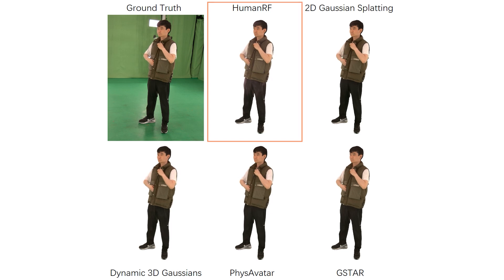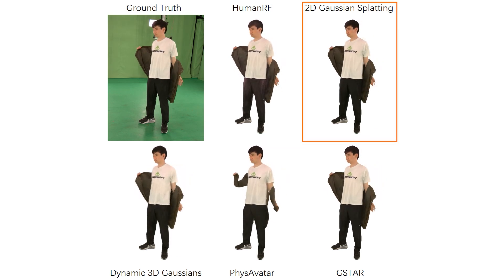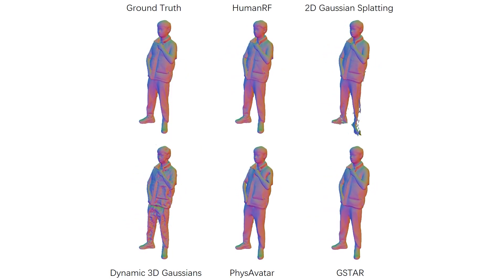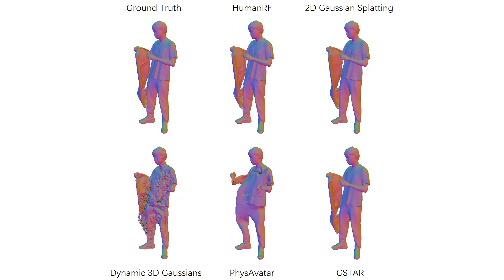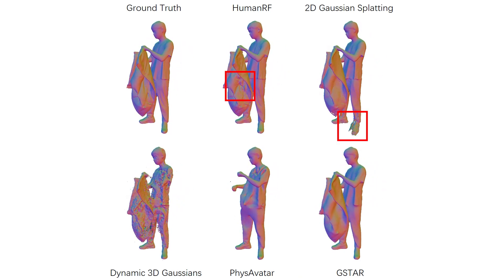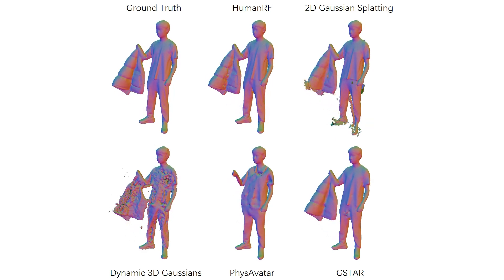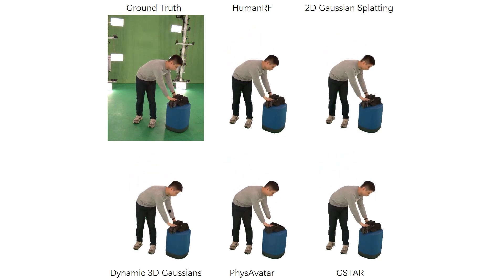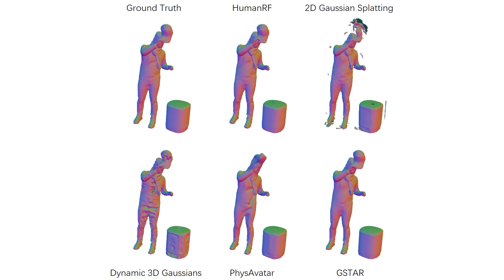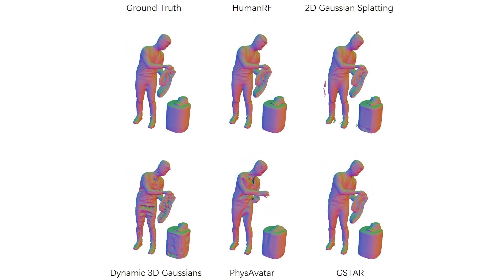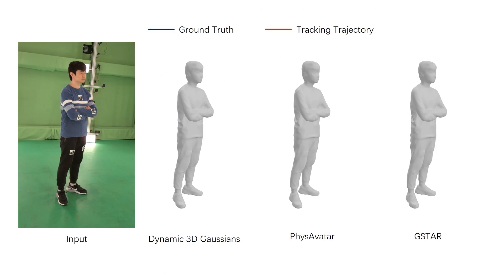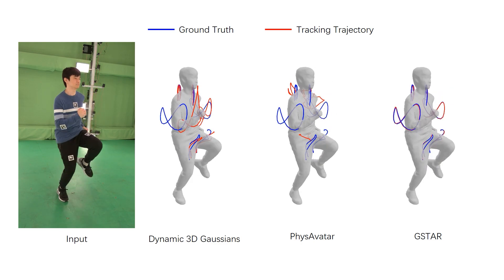Now we compare G-star with state-of-the-art methods. Human RF is a NeRF-based method and lacks tracking capabilities, while 2D Gaussian splatting struggles with both tracking and temporal stability. Dynamic 3D Gaussians produces noisy surfaces. Fizzy Avatar cannot handle topology changes. In contrast, G-star achieves both high-quality reconstruction and reliable tracking, while handling topology changes effectively. To evaluate tracking quality, we attach April tags on the human body to provide ground truth — G-star achieves significantly more accurate tracking results.